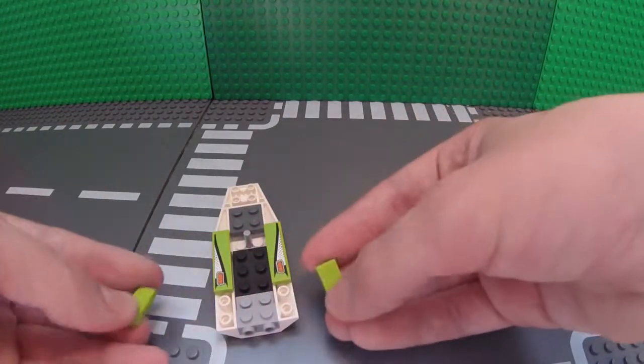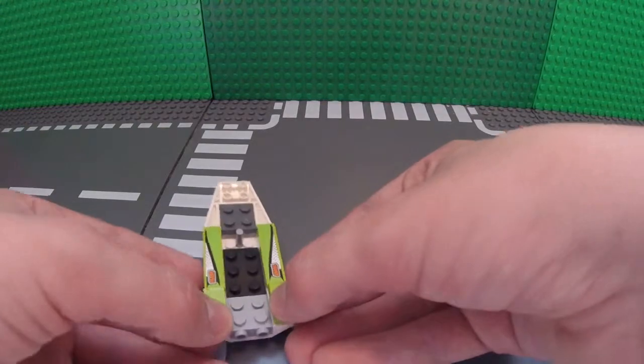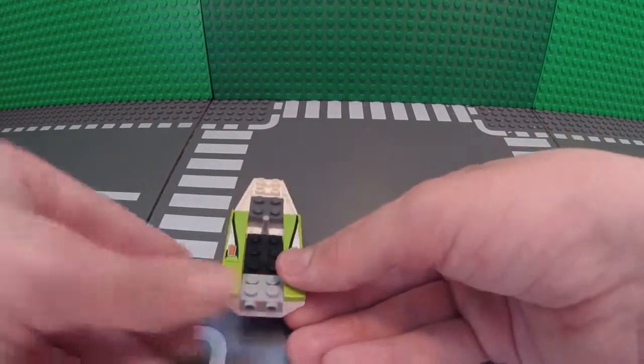Now take your 2 1x2 tiles and place them right at the back of the jet ski.